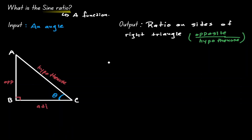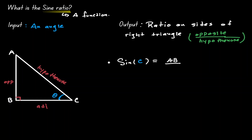If we get our function of sine and we plug in angle C, the outcome is going to be the ratio between the opposite and the hypotenuse. In this triangle, our opposite is AB, and our hypotenuse is AC. So we have evaluated our sine function.